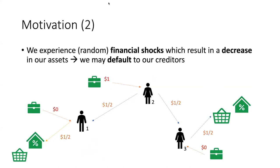However, entities also experience shocks in their everyday financial activities. Such shocks result in a decrease of their income and potentially their failure to pay their debts in full. So entities default to their creditors and readjust their payments. In our example, node one's assets decrease from one to zero, node two's assets decrease from two to one, and node three's assets decrease from one to zero. Now node two is able to pay a half to both nodes one and three, which in turn can pay to the external network, but only partially.